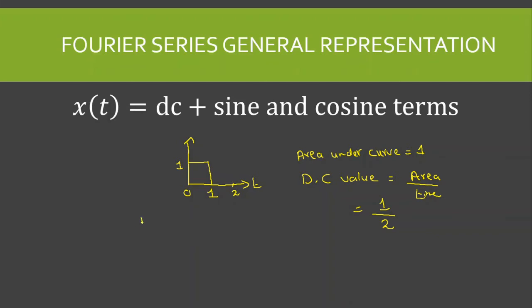But if we have a signal with a positive wave as well as a negative wave — for example amplitude goes from +1 to −1, from 0 to 1 and 1 to 2 on the time axis — because this wave is symmetrical about the time axis, the area under the curve is equal to 0. That is why the DC value is 0. So the time average of a function gives the DC value.